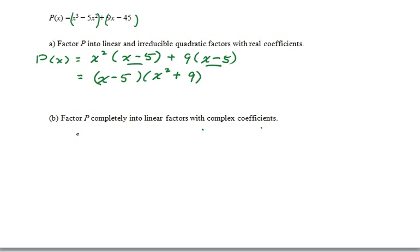So, in the second part, when I'm asked to factor completely into linear factors with complex coefficients, I can go that additional step and have factors of x plus 3i and x minus 3i in addition to the x minus 5. In part a, x squared plus 9 is called irreducible in the set of real numbers.